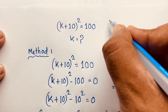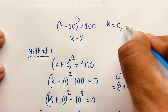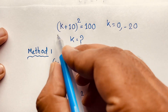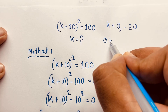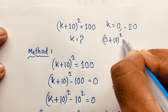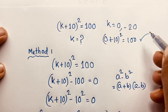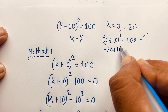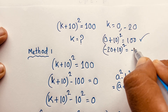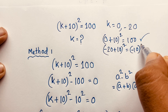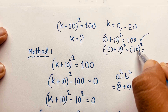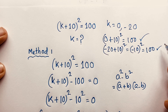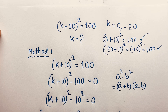Let's verify. k = 0 and k = -20. If I take k = 0: (0 + 10)² = 100. The left-hand side and right-hand side are both equal. Thank you all, take care everyone.